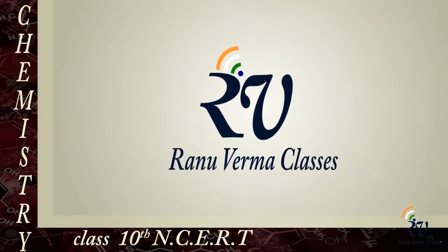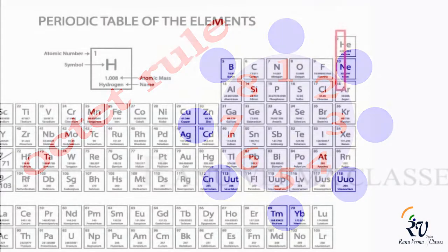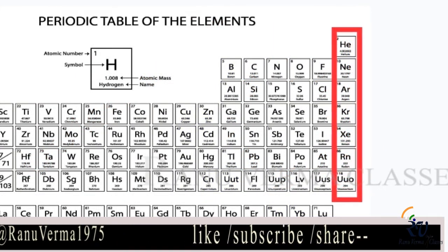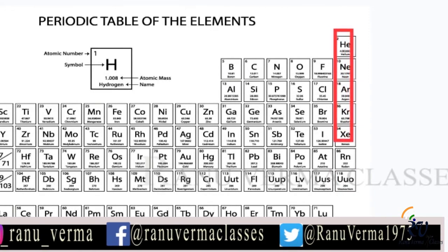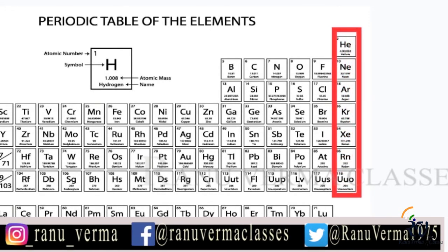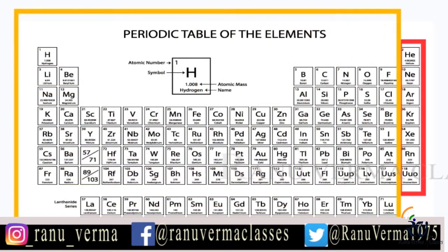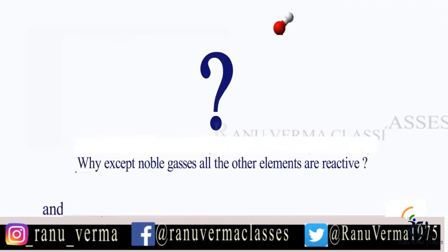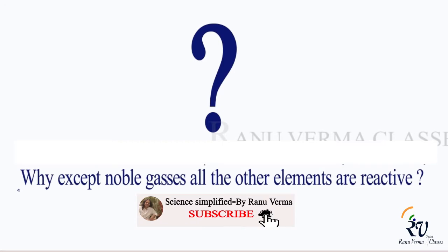Hello everyone, today we are going to discuss about the octet rule. As you know, the last group of the periodic table is filled with noble gases. Noble gases do not participate in any kind of chemical reactions. The rest of the elements in the periodic table participate in reactions to form new molecules or compounds. Now the question arises: if other elements can participate in reactions, why not noble gases?